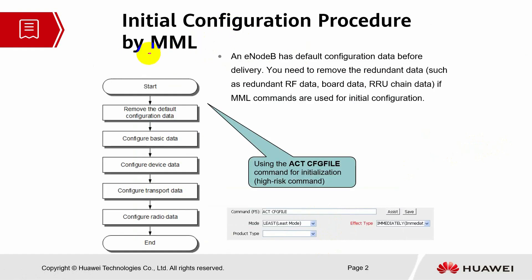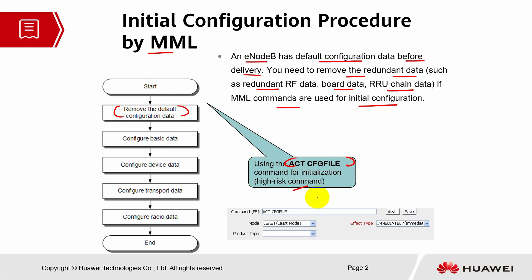Initial configuration procedure by MML. An eNodeB has a default configuration data before delivery. You need to remove the redundant data such as redundant RF data, board data, and RRU chain data if MML commands are used for initial configuration. For this activity, we have to activate the configuration file command for initialization. But take note, this is a high risk command. It can make the OM channel down if you do it from the remote client, so you have to make sure there is an auto recovery of the operation maintenance channel linked.